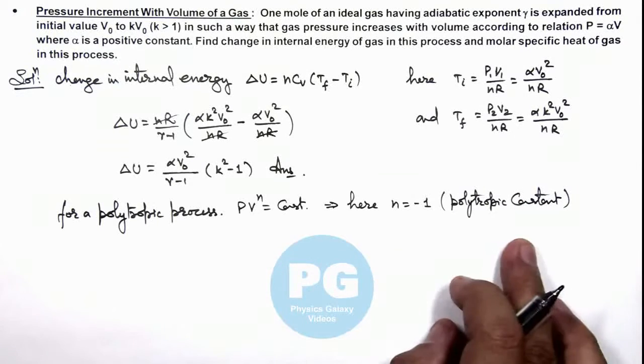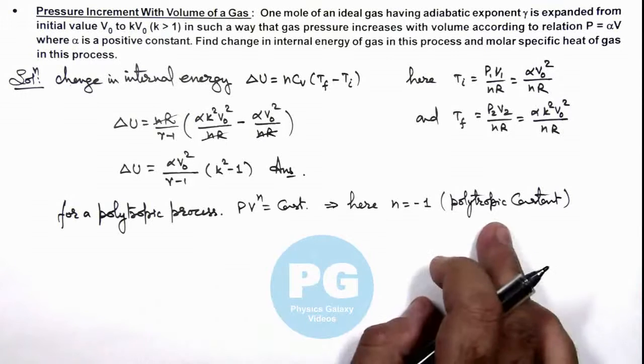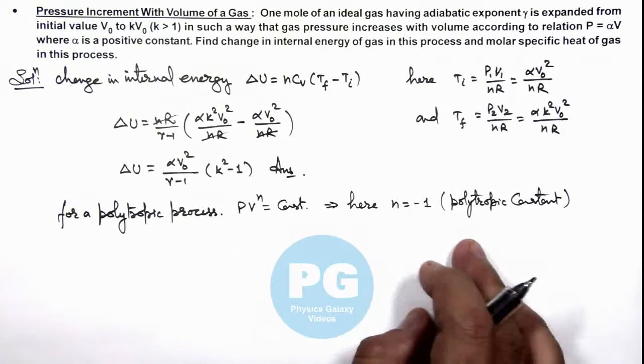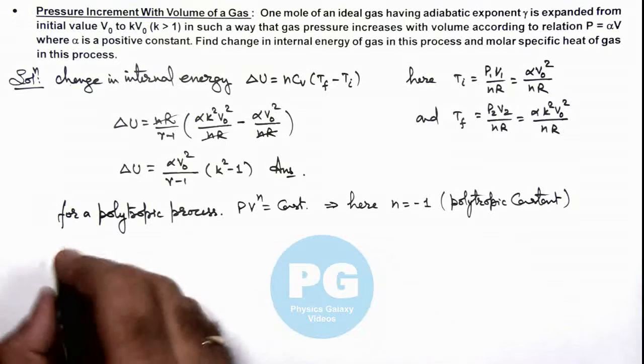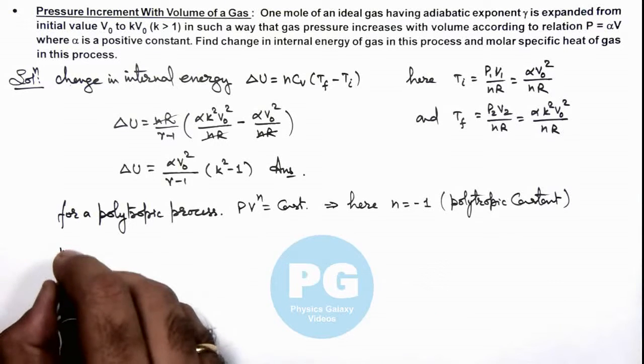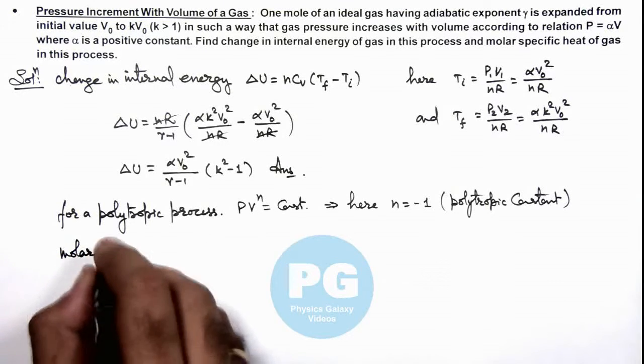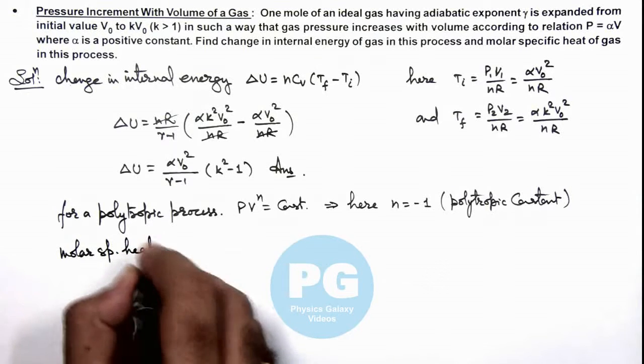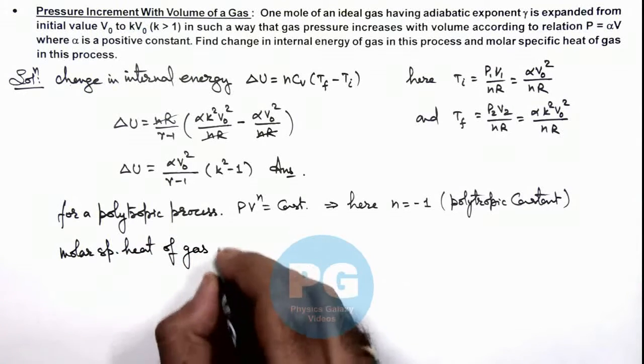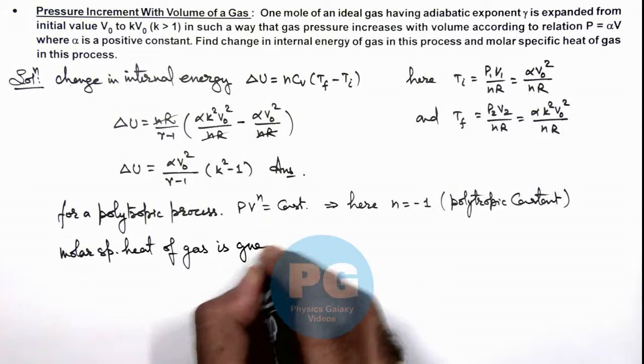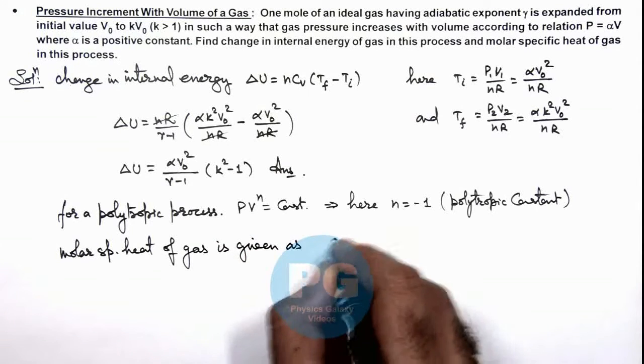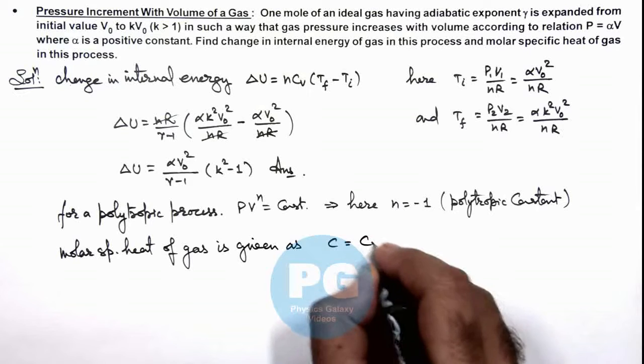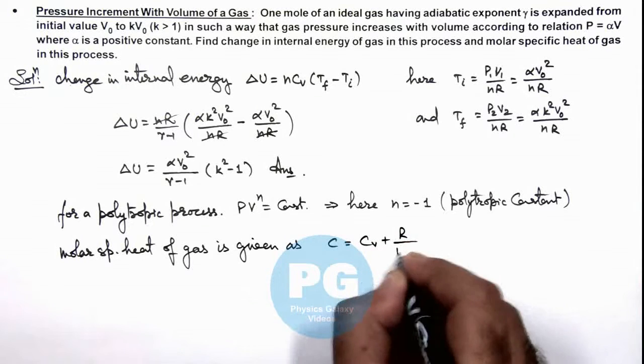We already studied about polytropic process and polytropic constant in detail in concept videos. Using which we can write molar specific heat of gas in a polytropic process is given as this value we can write as Cᵥ + R/(1-n).